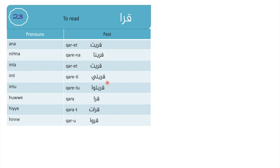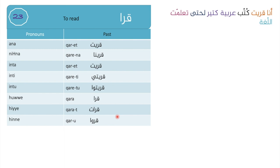Enti riiti. Entu riitu. Huwe ara — he read. Hiya arat — she read. And henne aru — they read. The alternate colloquial forms are: arayt, rayna, rayt, rayti, raytu, ara, arat, and aru — they read.